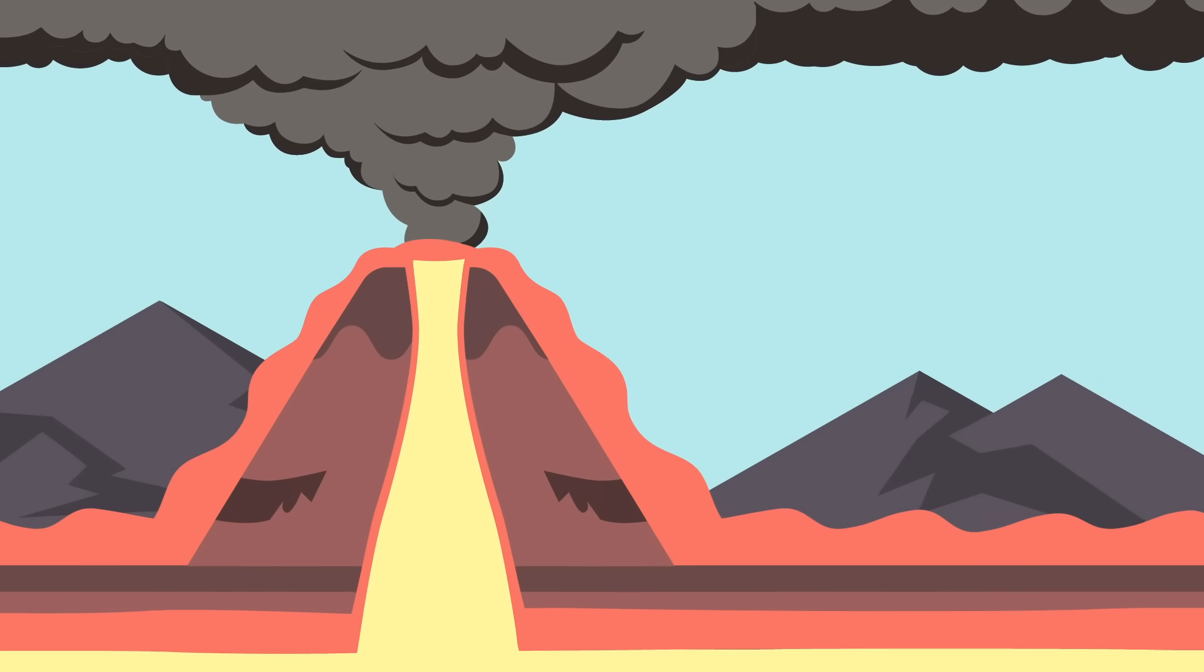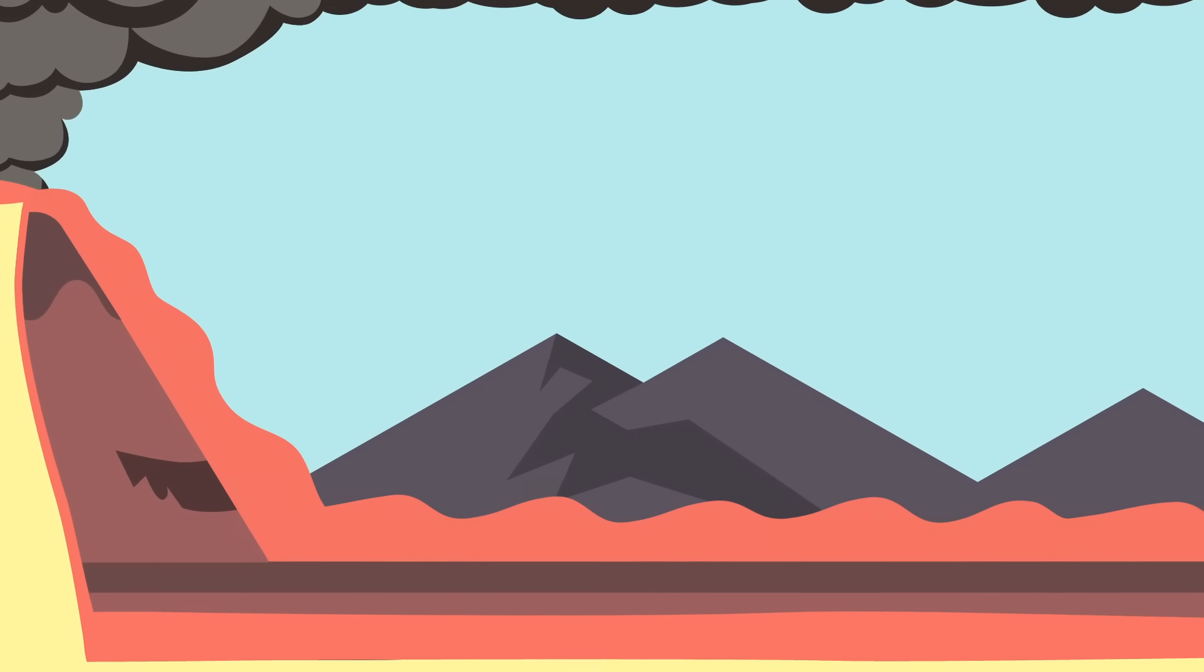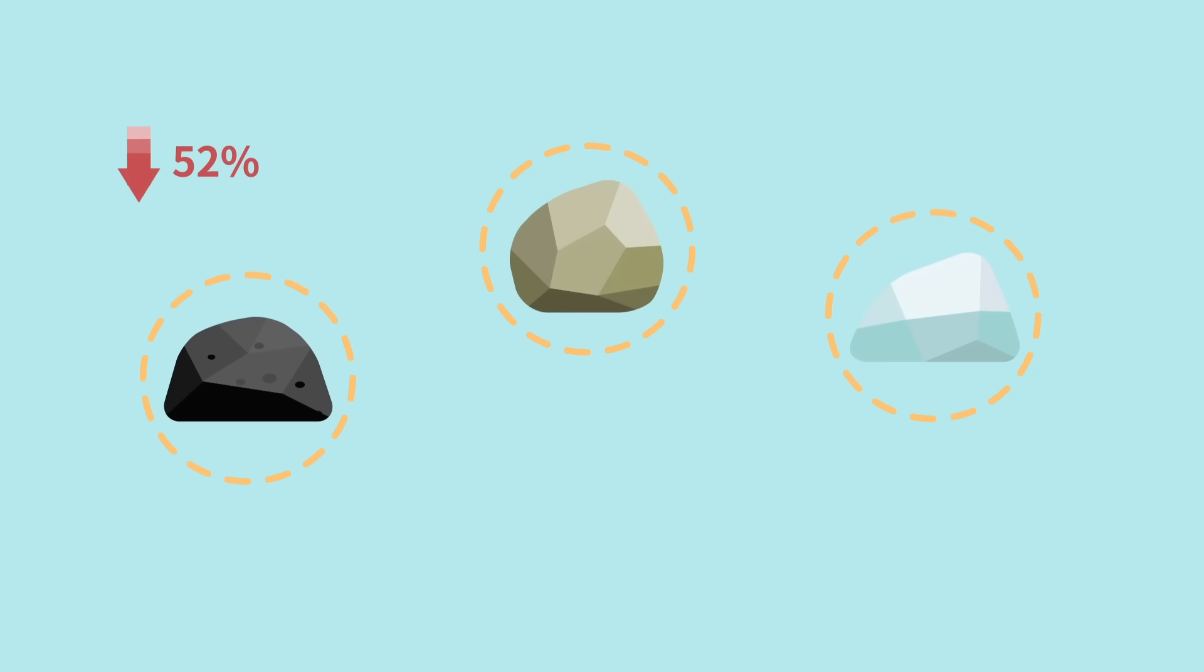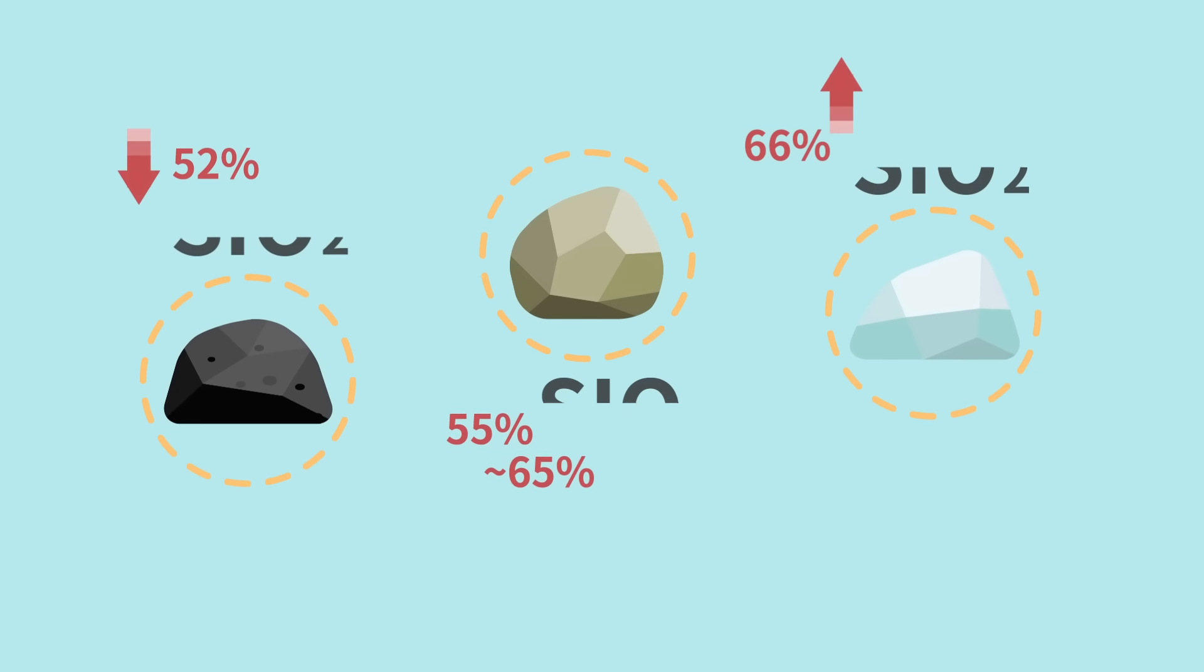What happens when this hot lava cools down? If the lava spreads across a wide area, it hardens and turns into rock. This volcanic rock is classified as basalt, andesite, or rhyolite, depending on its silicon dioxide content.